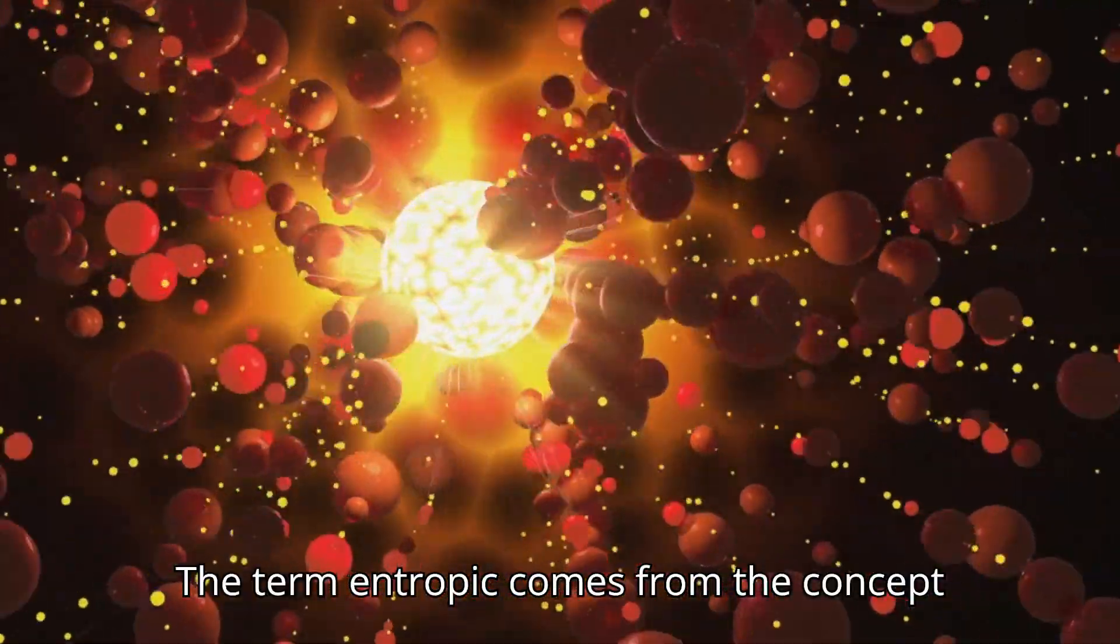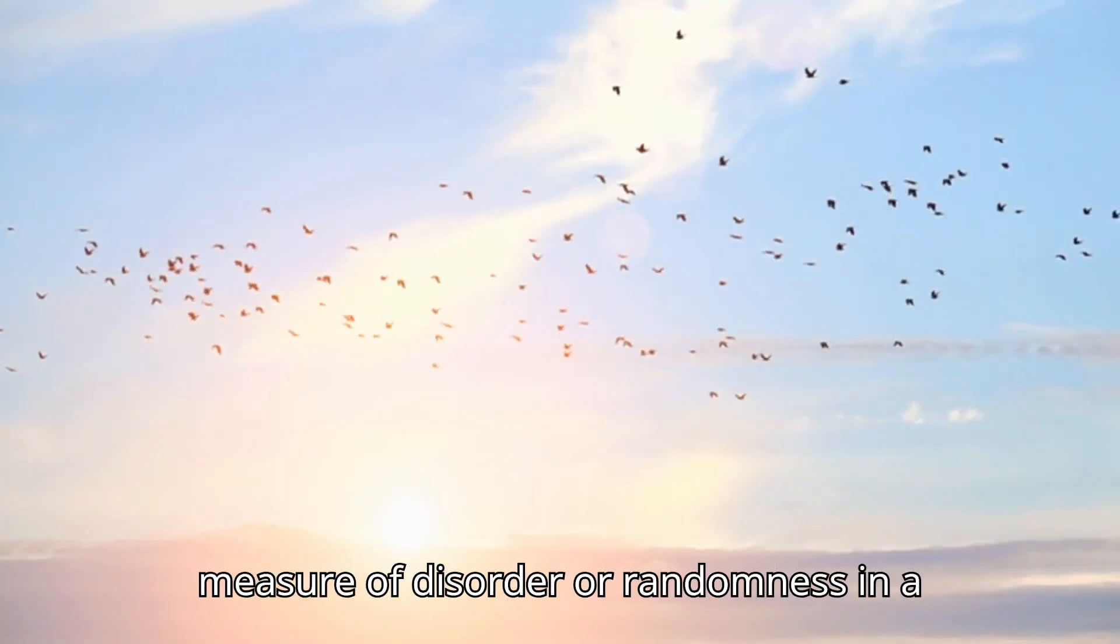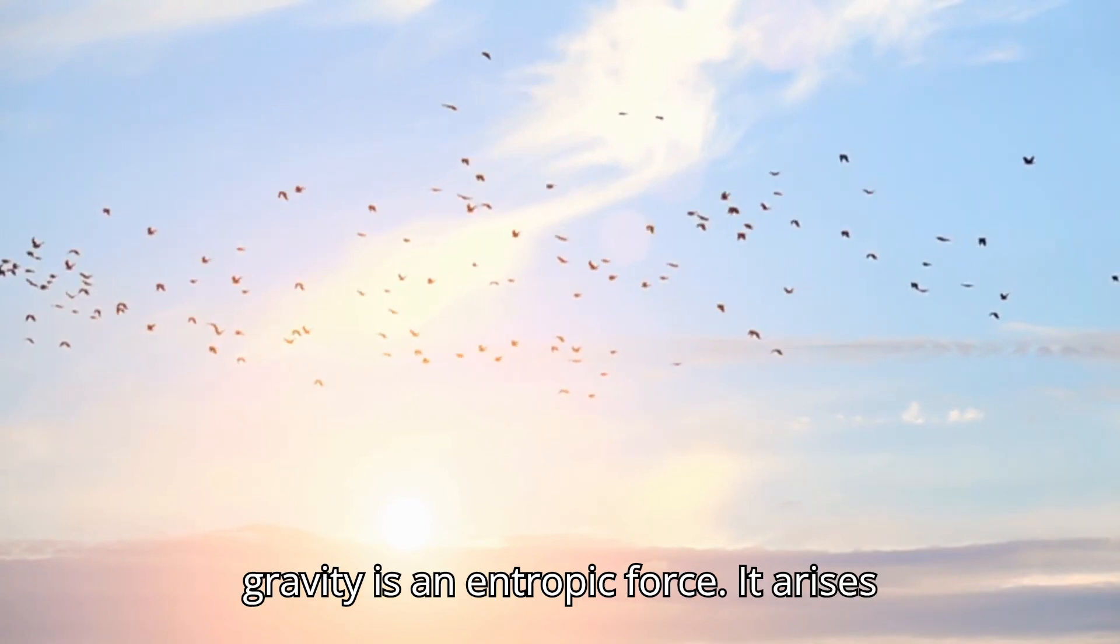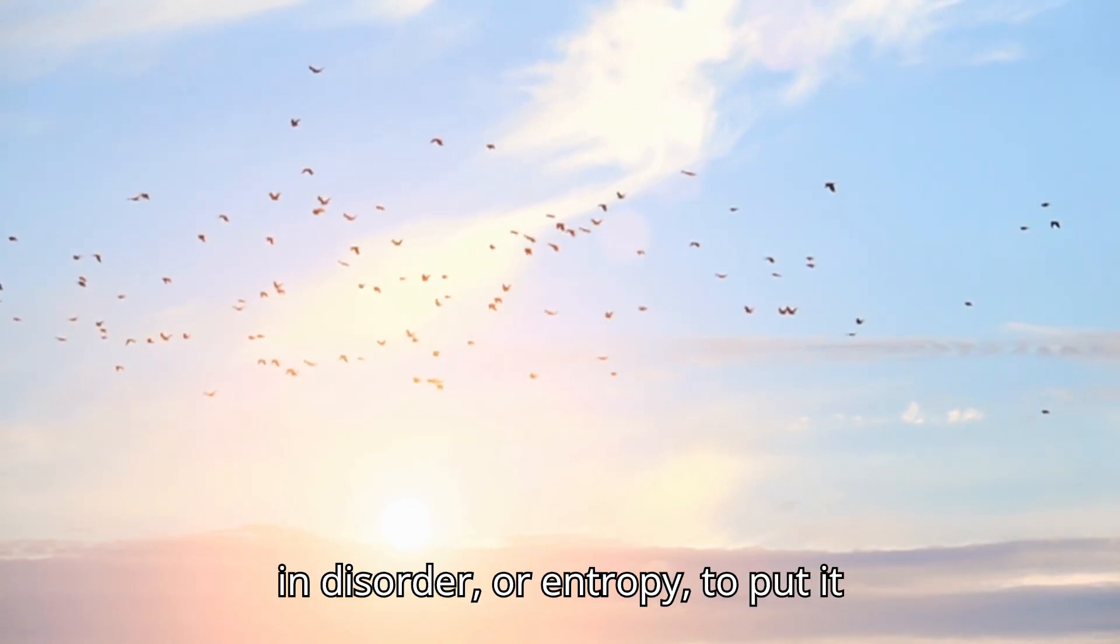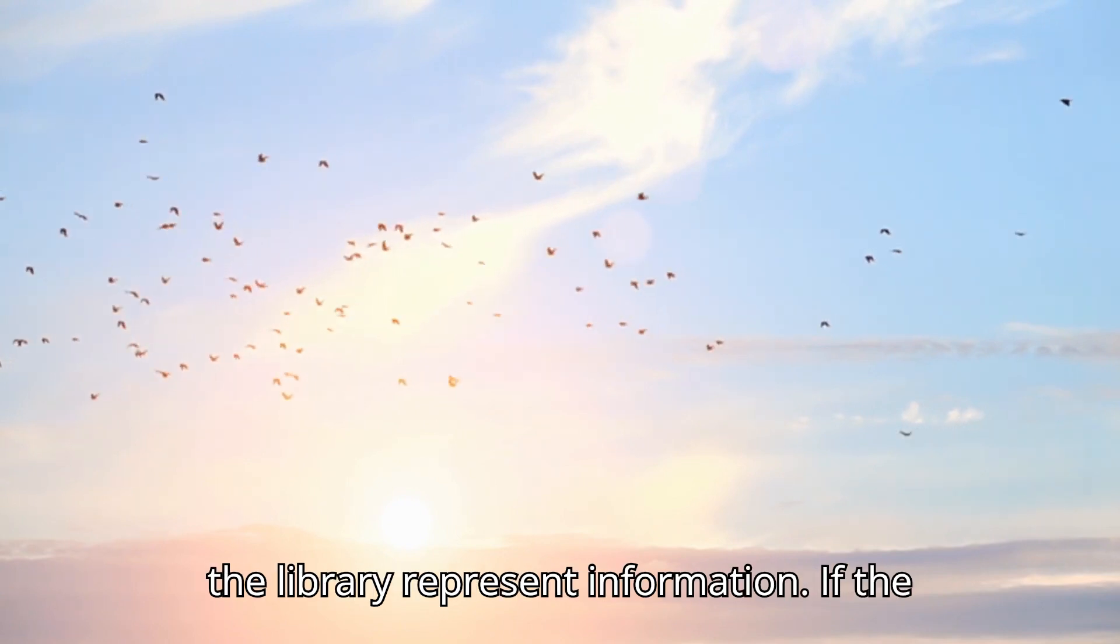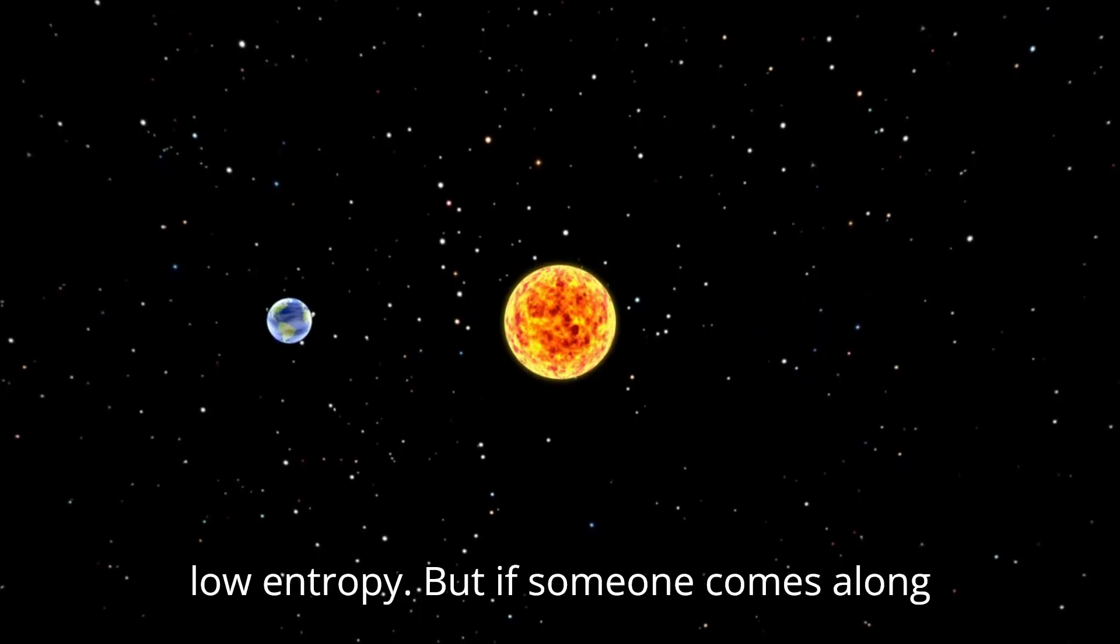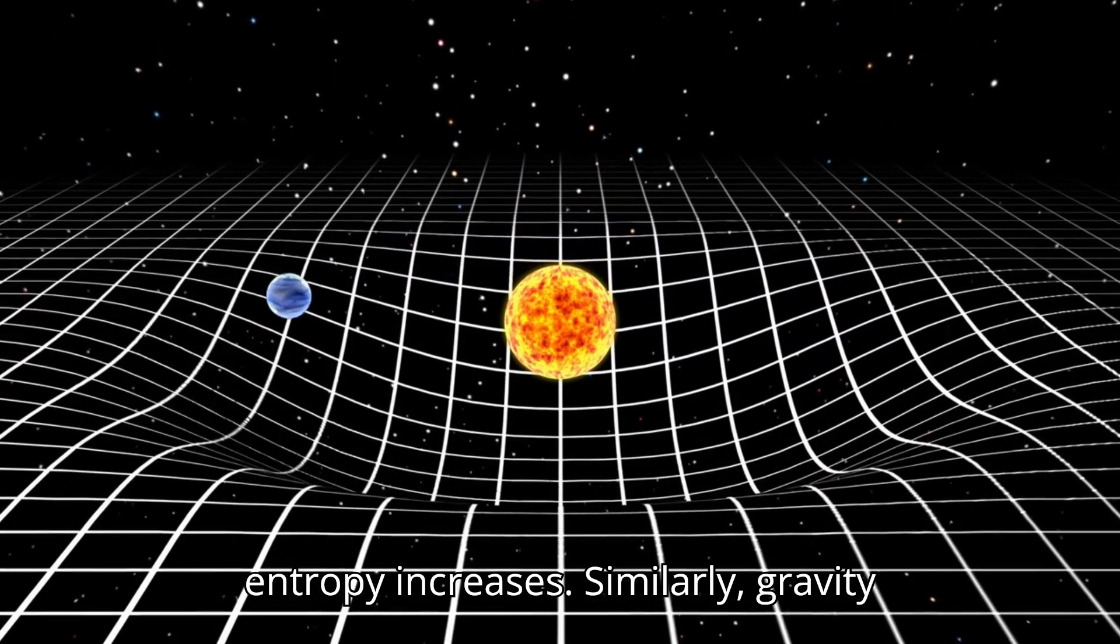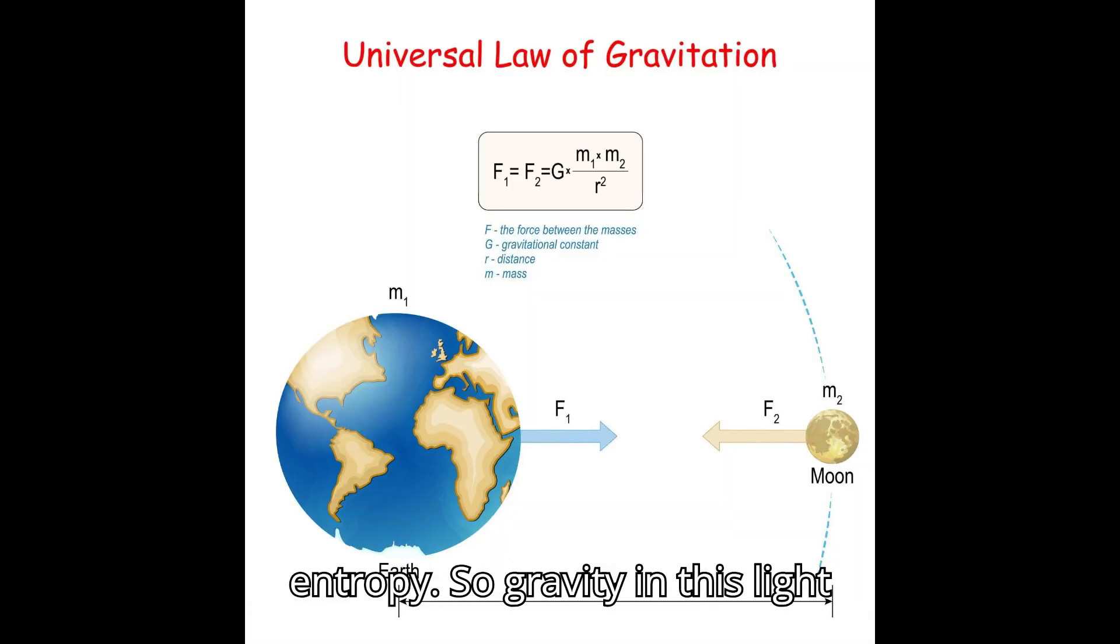The term entropic comes from the concept of entropy, which is, in a nutshell, a measure of disorder or randomness in a system. According to Verlinde, gravity is an entropic force. It arises from the universe's tendency to increase in disorder or entropy. To put it simply, imagine a library. The books in the library represent information. If the books are well organized, the library has low entropy. But if someone comes along and randomly rearranges the books, the entropy increases. Similarly, gravity could emerge from the universe's tendency to rearrange information, increasing entropy.